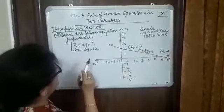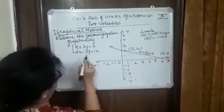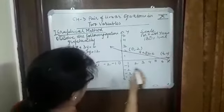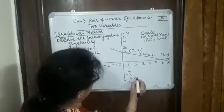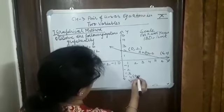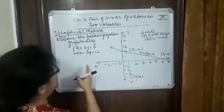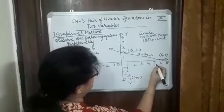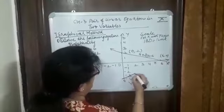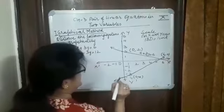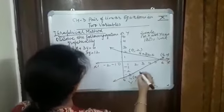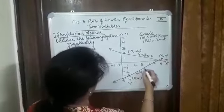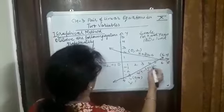Next, if x is 0, y is minus 4. So this is (0,-4). If y is 0, again x is 6. So now this is the second line, 2x minus 3y equal to 12.